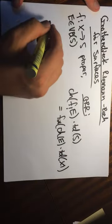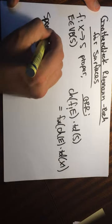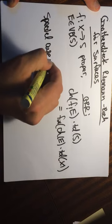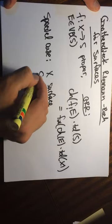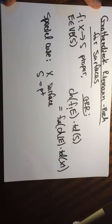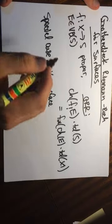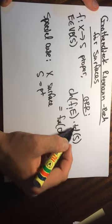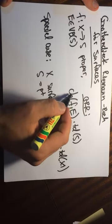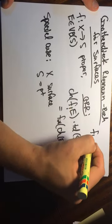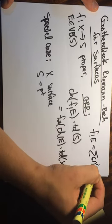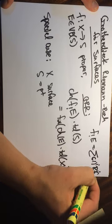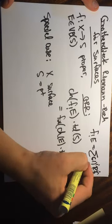And so we want to look at the special case where X is a surface and S is a point. And so in this case, so this left-hand side, this just becomes the alternating sum R^i of f_* of E.